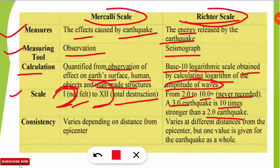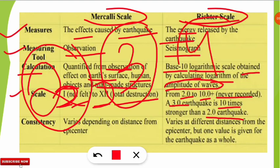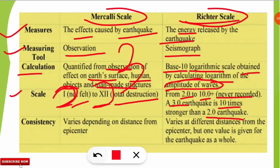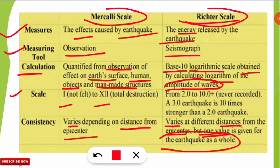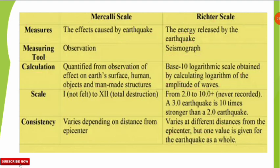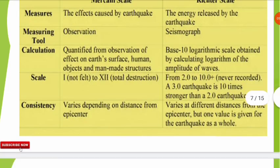That is why it is called the base-10 logarithmic scale — for every point increase on the Richter scale, intensity is 10 times more destructive. Regarding consistency: the Mercalli scale consistency varies depending on the distance from the epicenter. The Richter scale consistency also varies at different distances from the epicenter, but one important distinction is that a single value is given for the earthquake as a whole — which is not the case with the Mercalli scale.